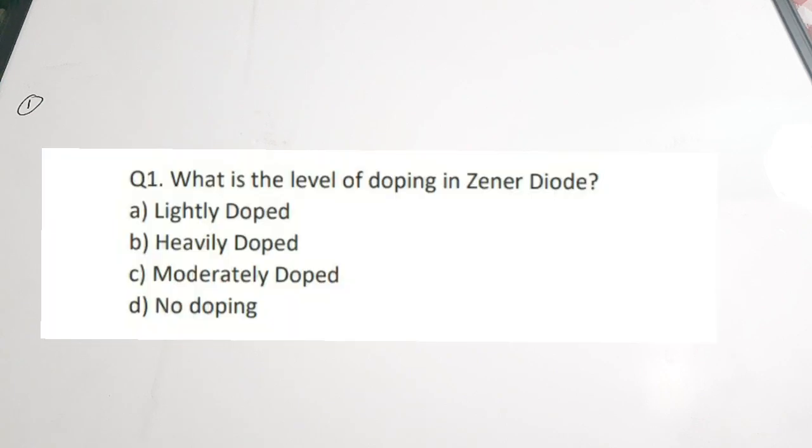Question 1: What is the level of doping in Zener diodes? Options: A. Lightly doped, B. Heavily doped, C. Moderately doped, D. No doping. A Zener diode is heavily doped so that breakdown voltage occurs at lower voltages. For even a small applied voltage to cause breakdown, the Zener diode is actually heavily doped. The correct answer is option B, heavily doped. The heavy doping ensures that breakdown happens quickly.